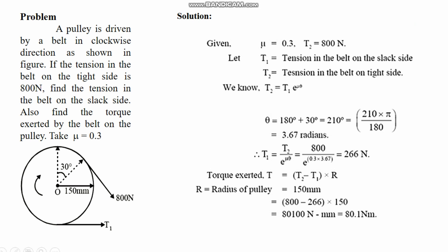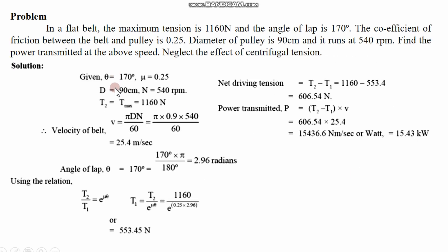Next problem. In a flat belt, the maximum tension is 1160 Newton. The maximum tension is T2, which is the tight side tension. The angle of lap is 170 degrees. The coefficient of friction between the belt and the pulley is 0.25. The diameter of the pulley is 90 centimeters and it runs at 540 RPM. Find the power transmitted at the above speed. Neglect the effect of centrifugal tension.